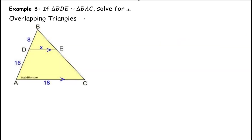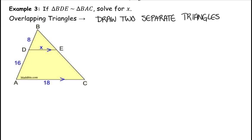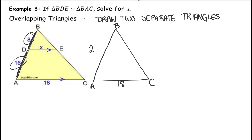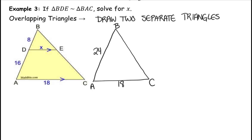Here we have an example of overlapping triangles. The first thing we're going to do is draw them as two separate triangles. I'm going to take the big triangle and copy it down — that's A, B, C. This length is 18. What is this other length? Well, it's 16 plus 8, because this piece is 16 and this piece is 8, so this will be 24. The third side doesn't have a label, so that's all we've been given.